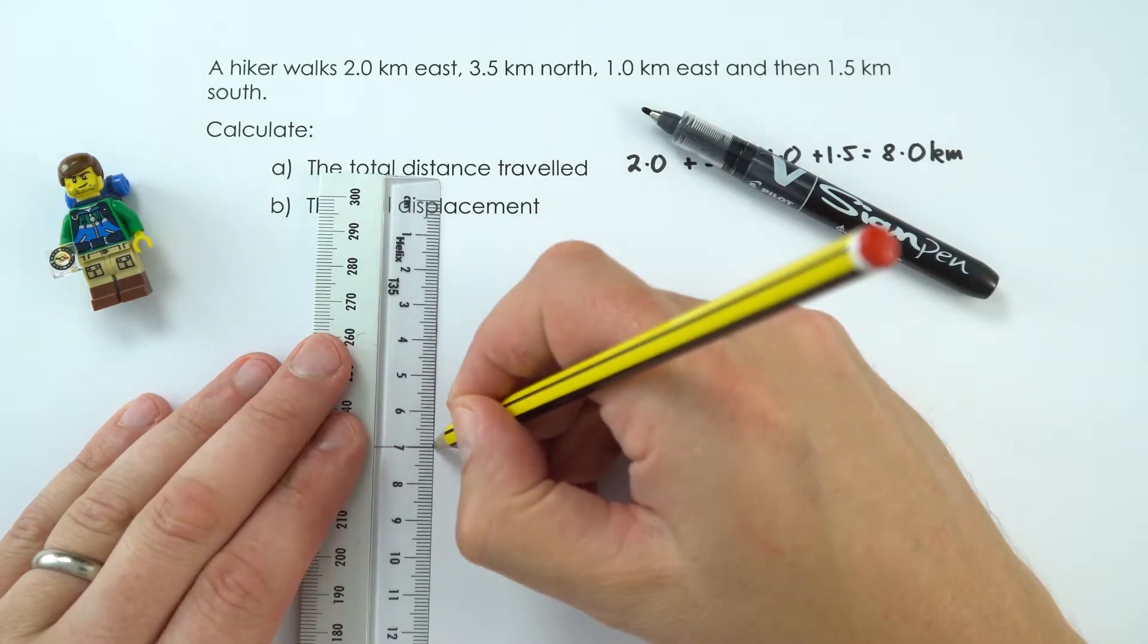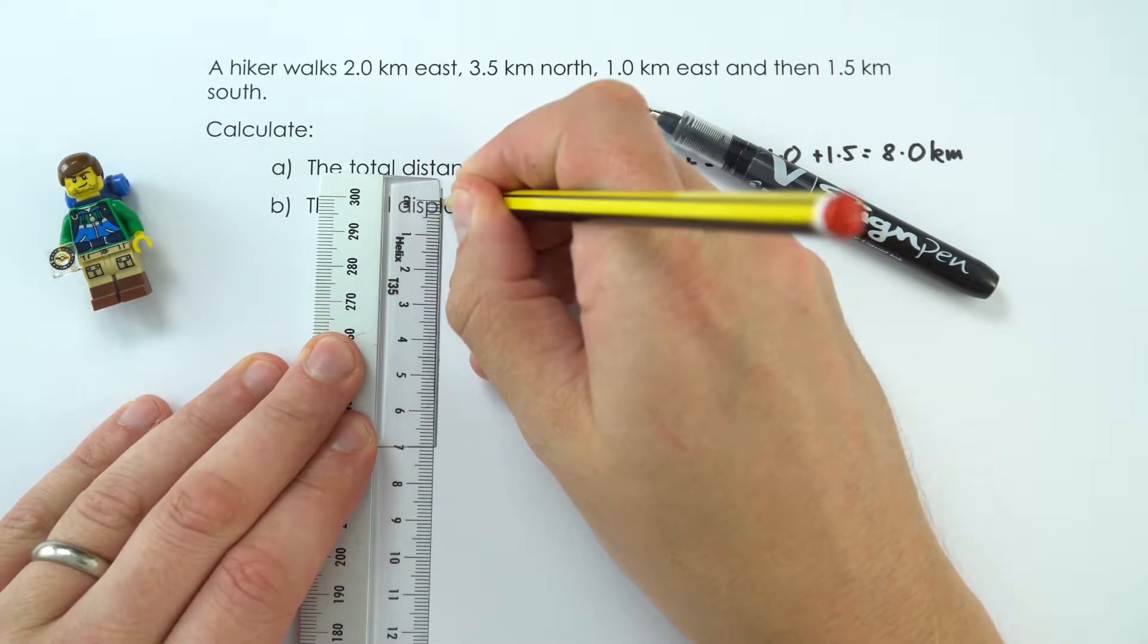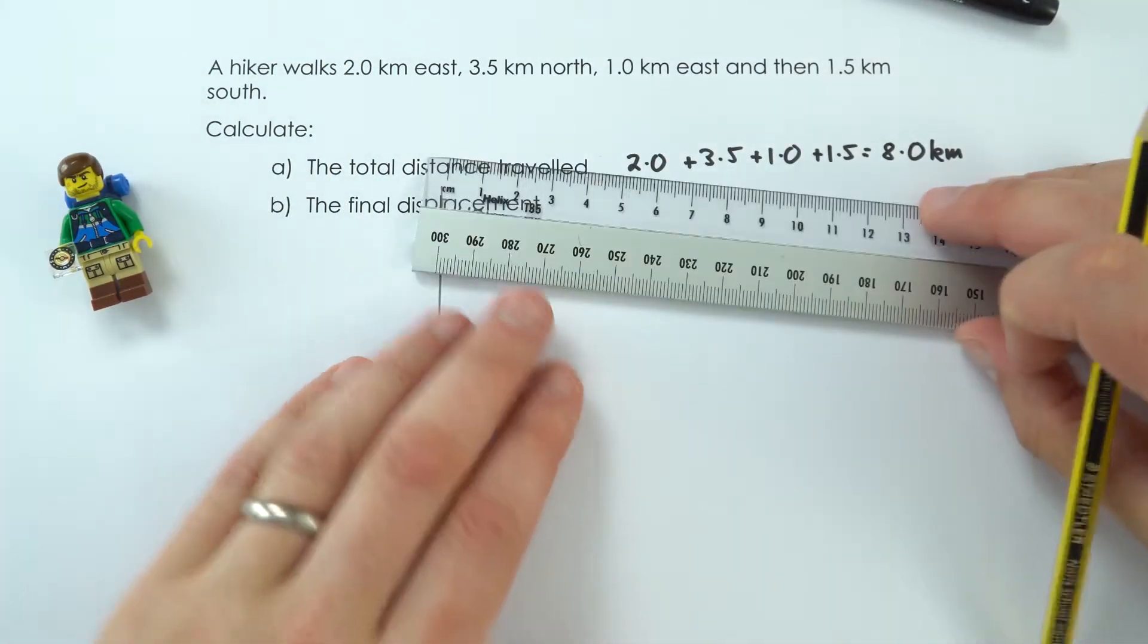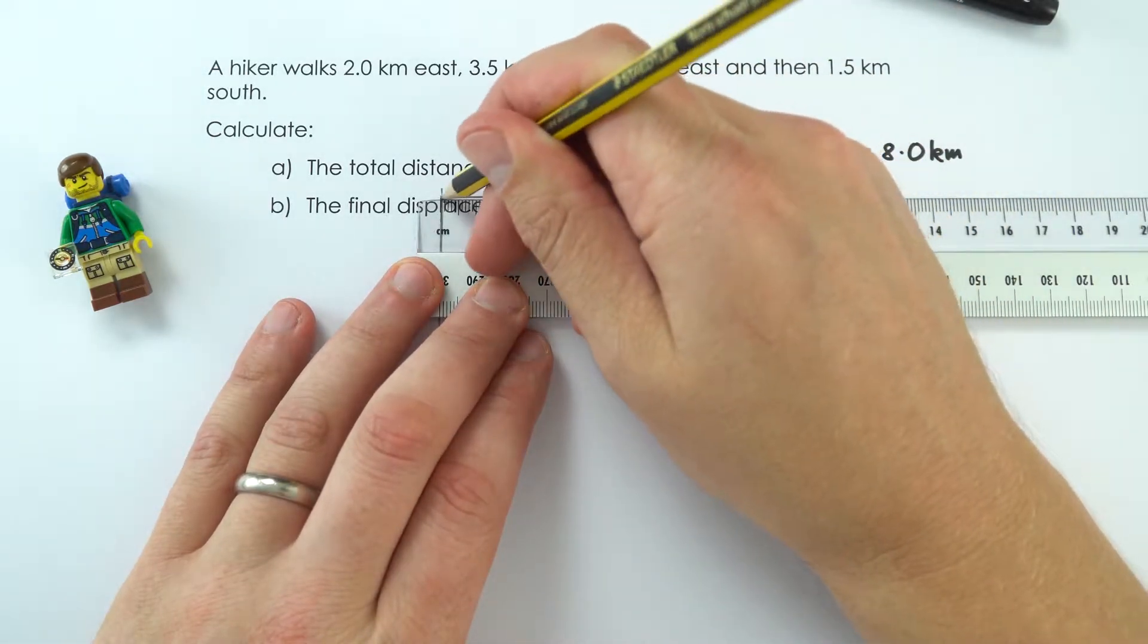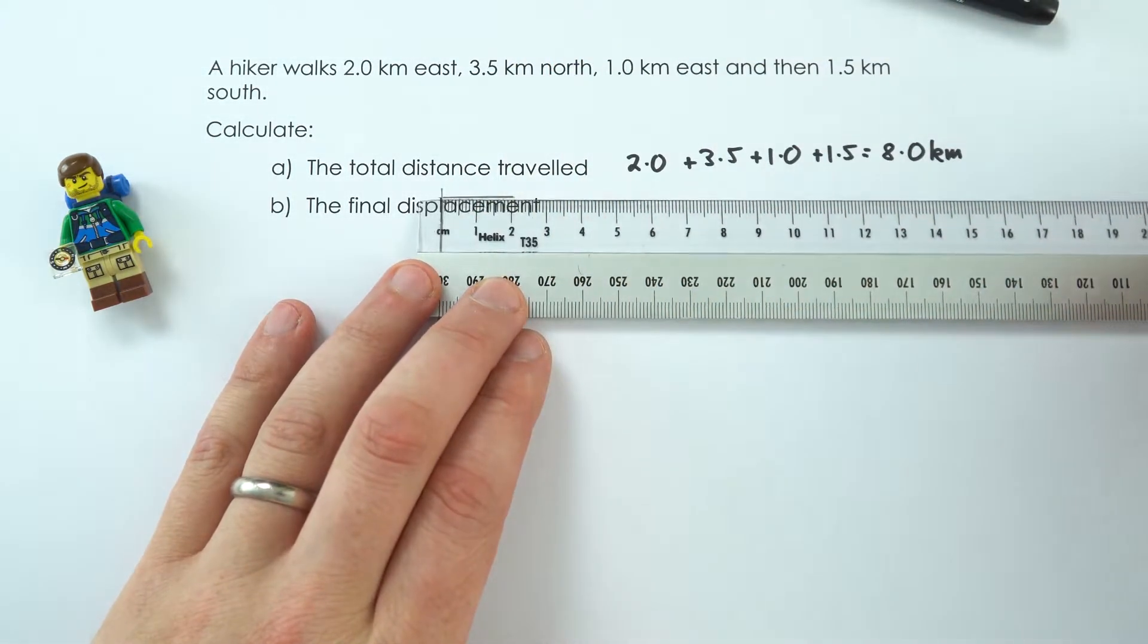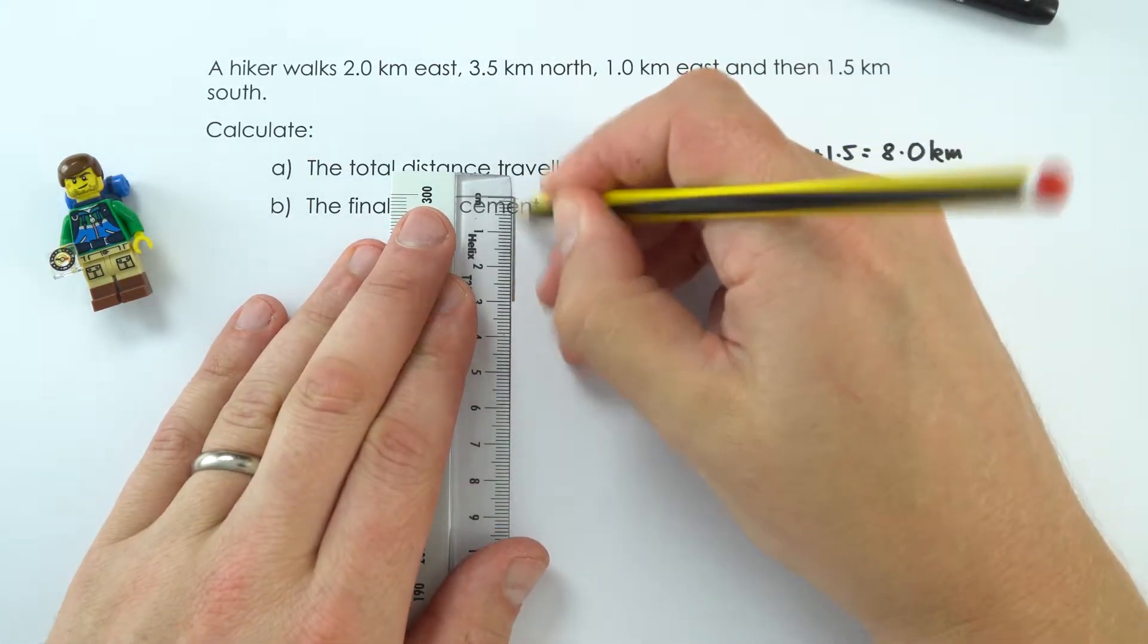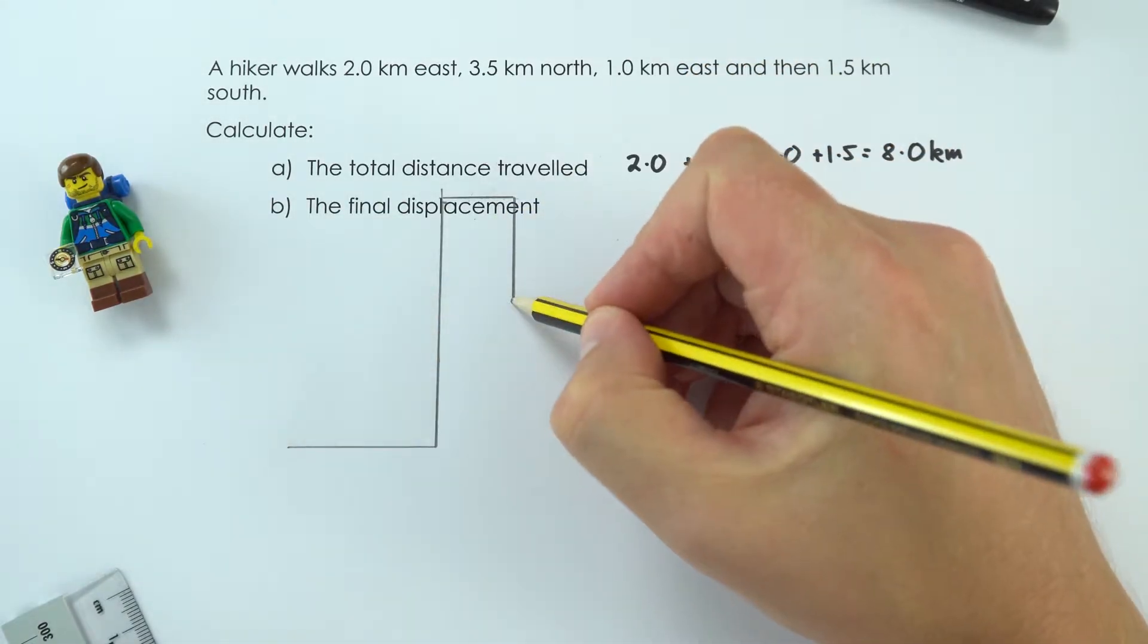I've gone over that, but never mind. So they've gone seven centimeters up to there. Then they've gone a kilometer east, so two centimeters along, and then 1.5 kilometers south, which is three centimeters. Okay, so that is my diagram. They started here and they ended here.